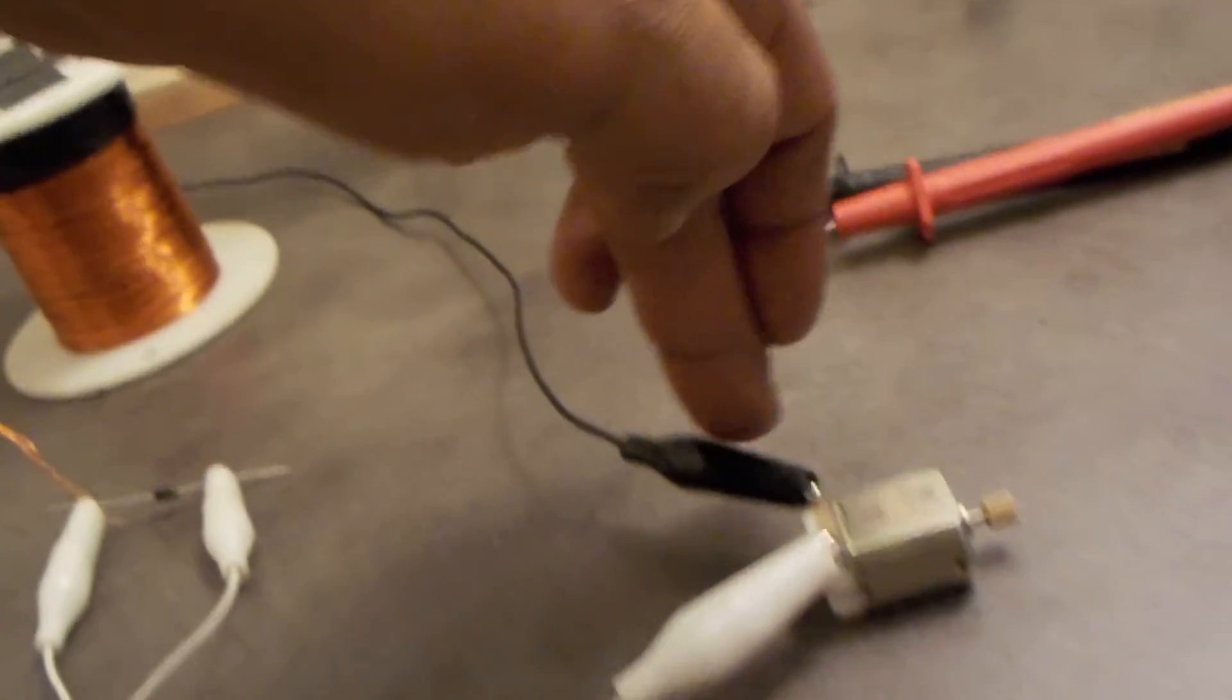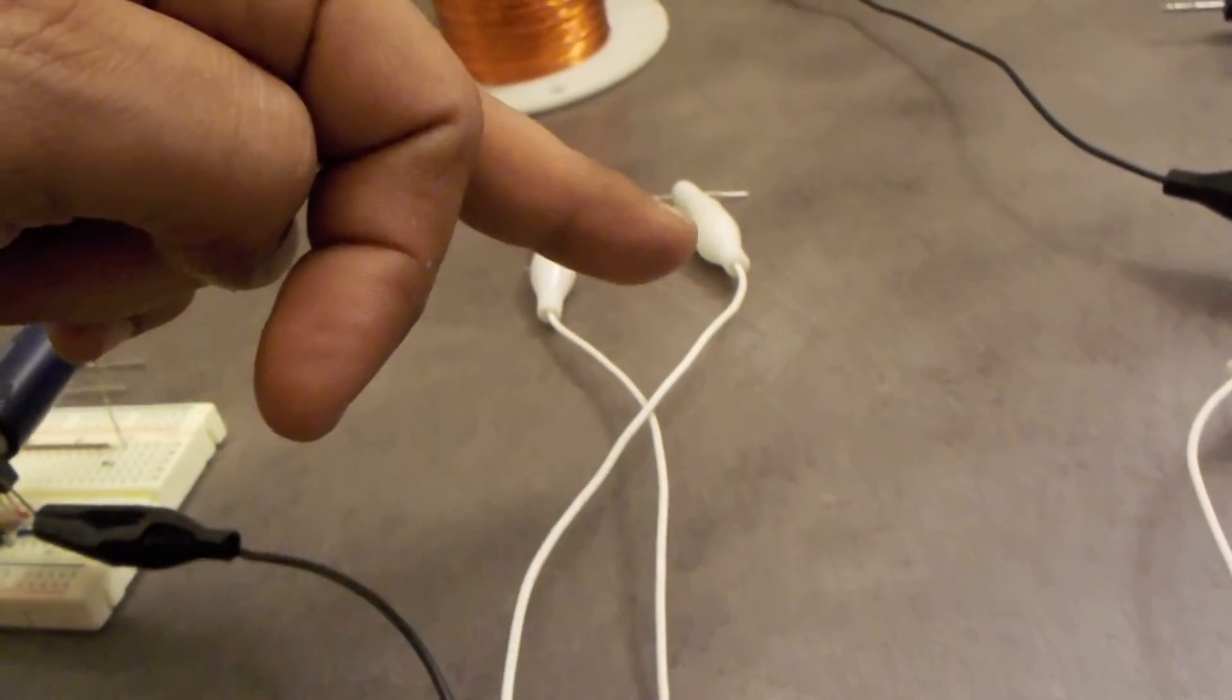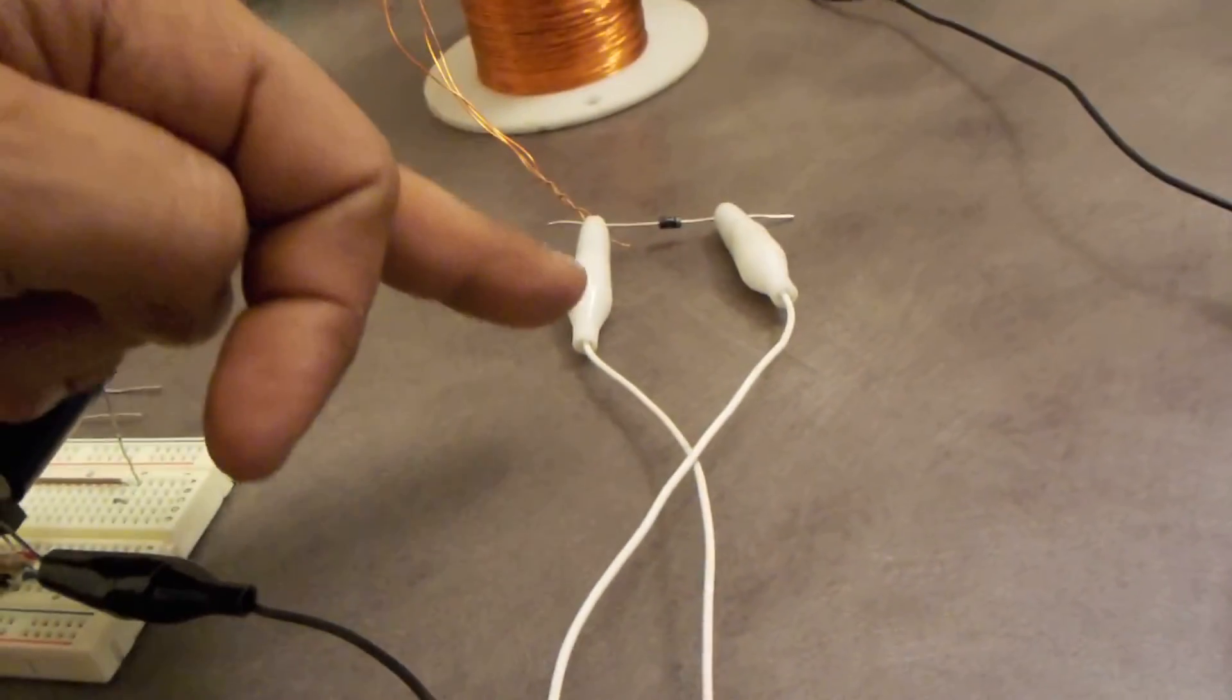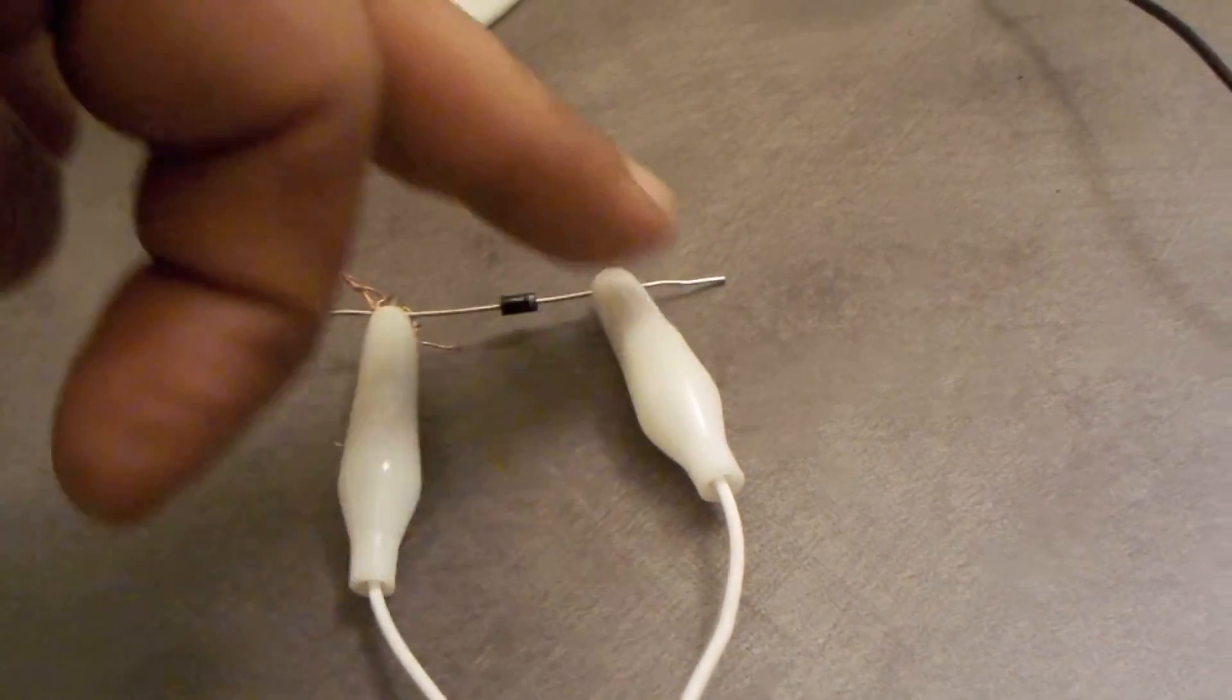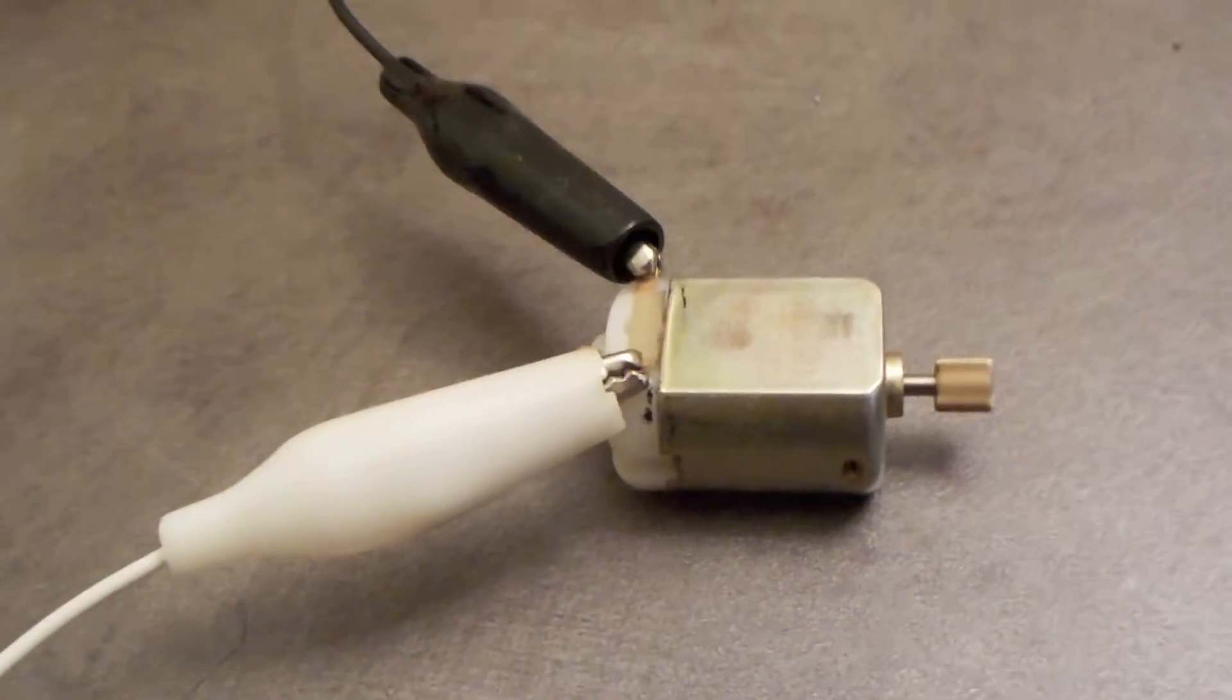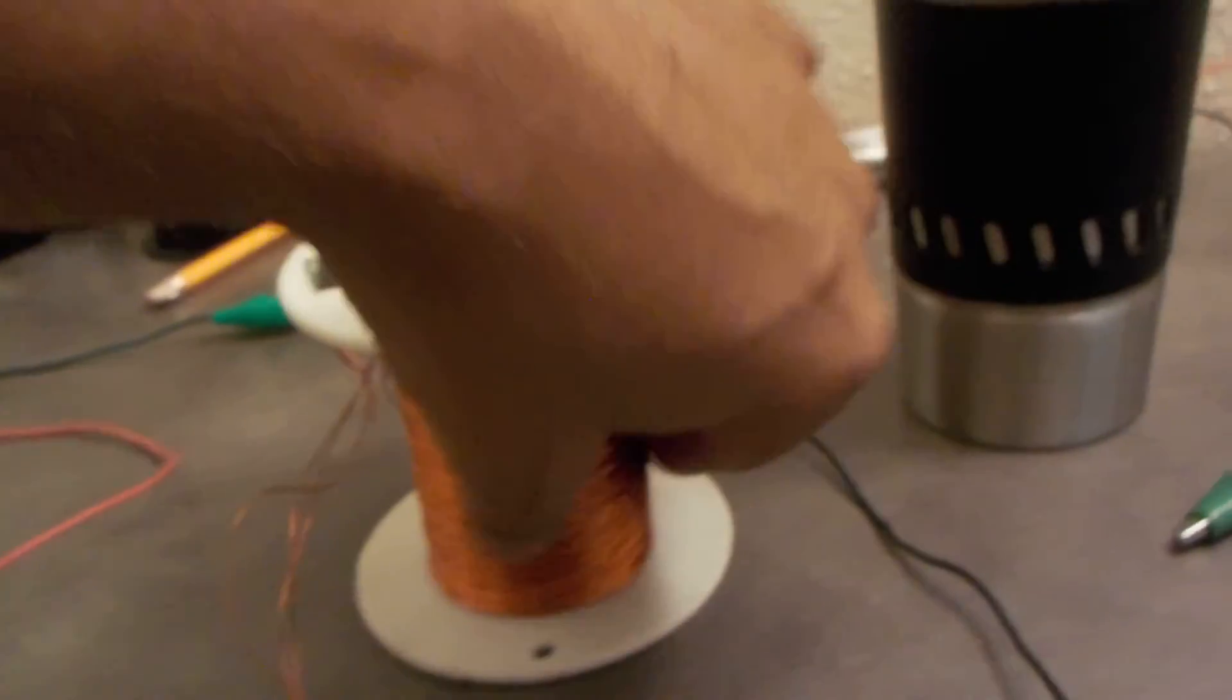I'm running it through the motor. The positive of the collapsing field is rectified right here where the negative flips to positive. I put a diode on it, so it's running off the collapsing electromagnetic field coming from this coil right here.